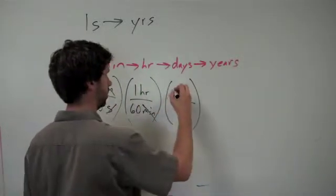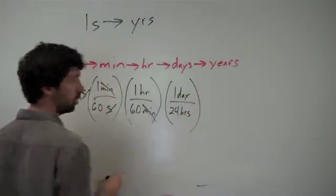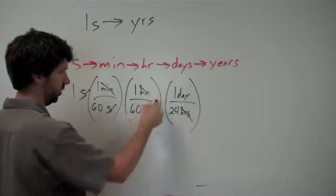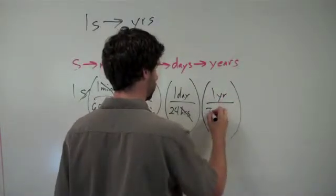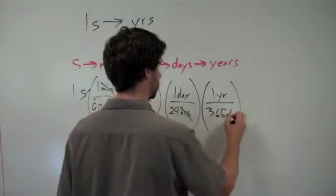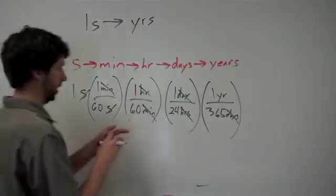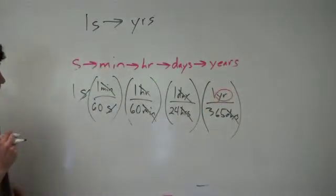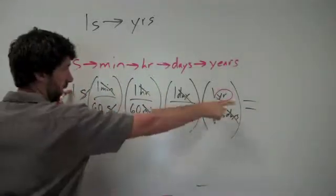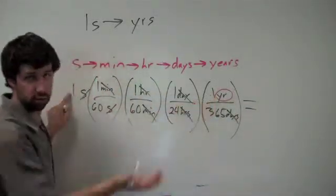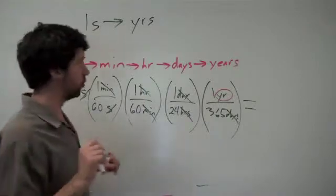Then I know that one day is 24 hours, so that hours and hours cancel out — now we're in days. And last of all, one year is approximately 365 days, so that day and day cancel out. If you look, the only unit remaining is the one we want to end up in: years. To find the answer, we simply multiply across the top. 1 times 1 times 1 times 1 times 1 is just 1. So then we divide by 60, divide by 60, divide by 24, divide by 365.